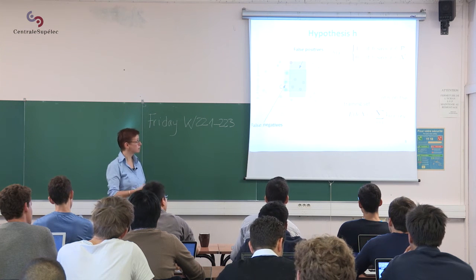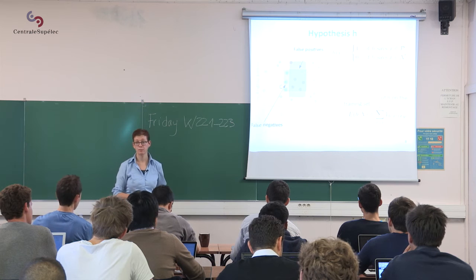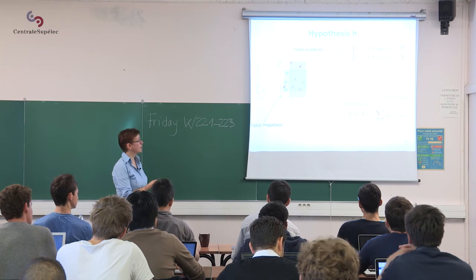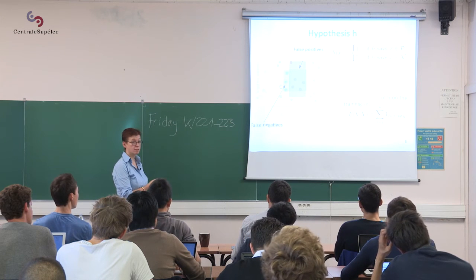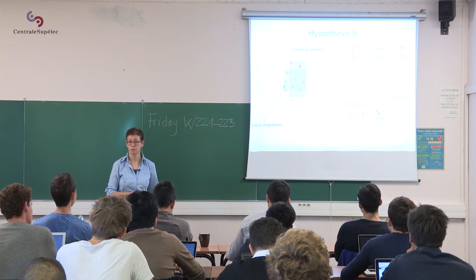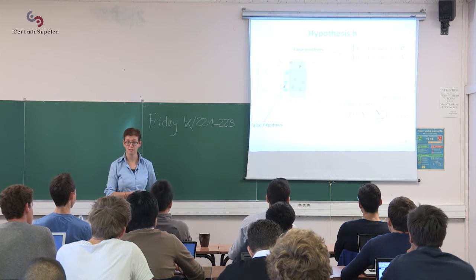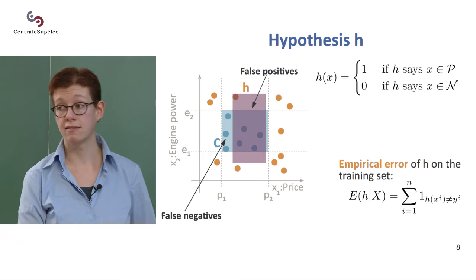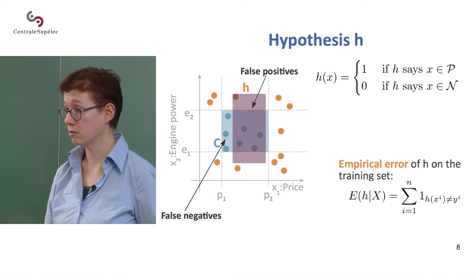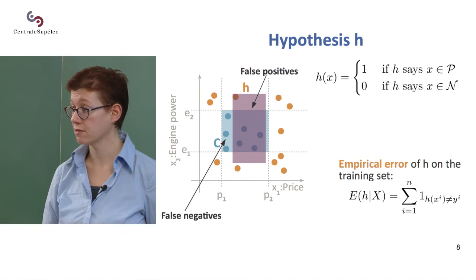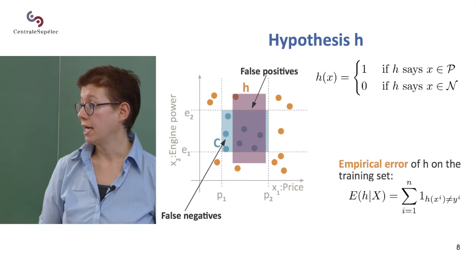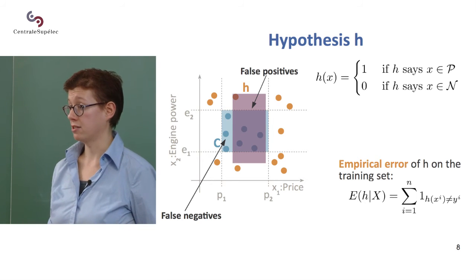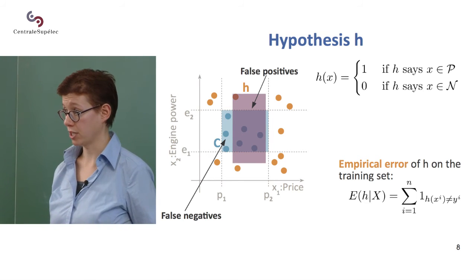The points I've labeled as positives when they weren't positives are called false positives, and the ones I've labeled as negatives when they weren't negatives are called false negatives. You also have true positives and true negatives according to the same logic.